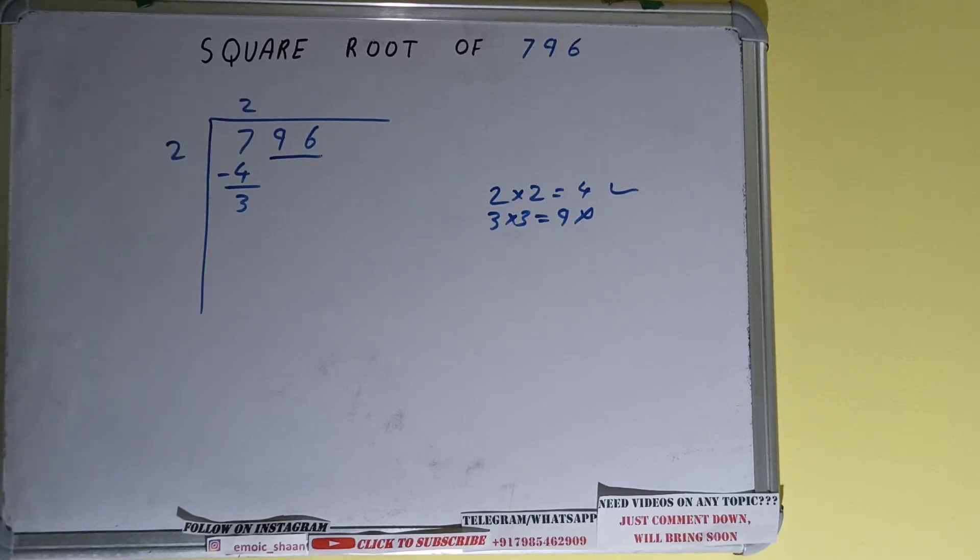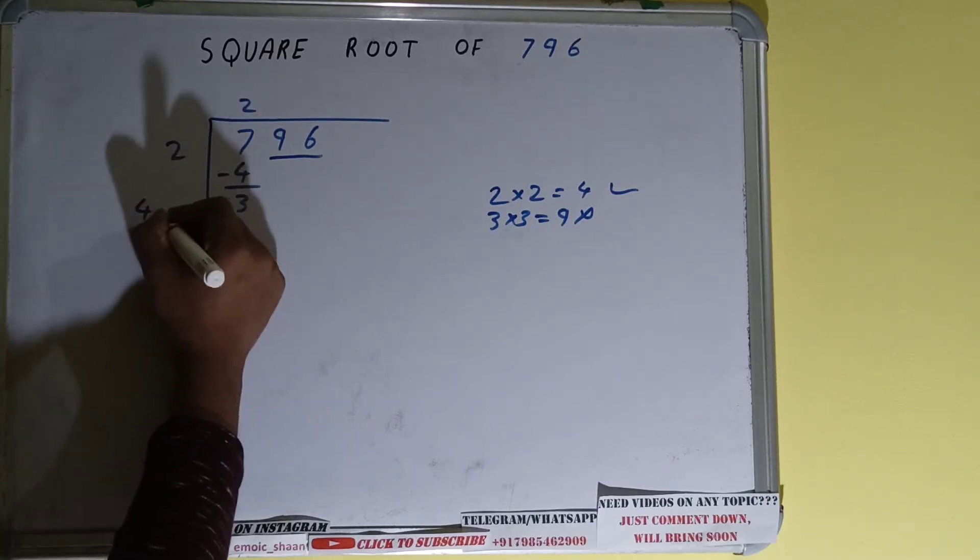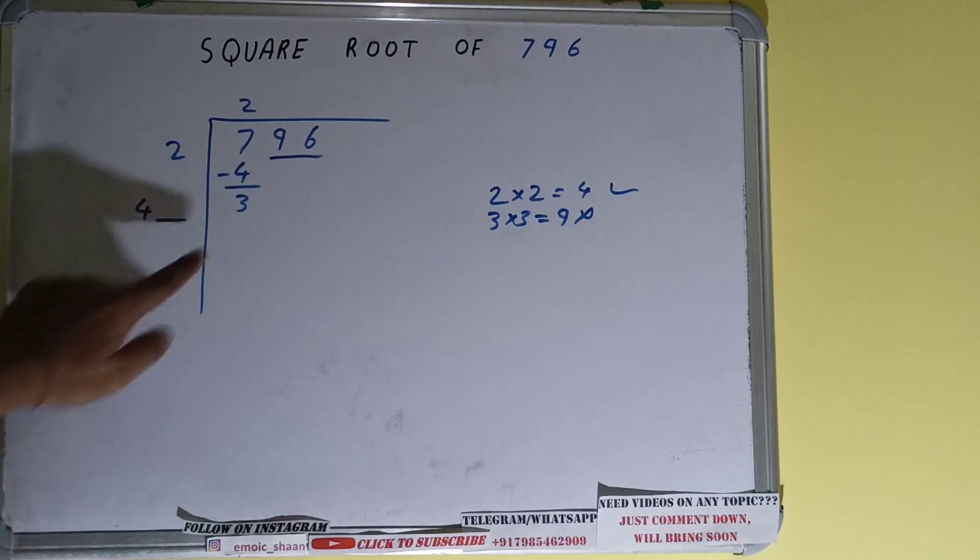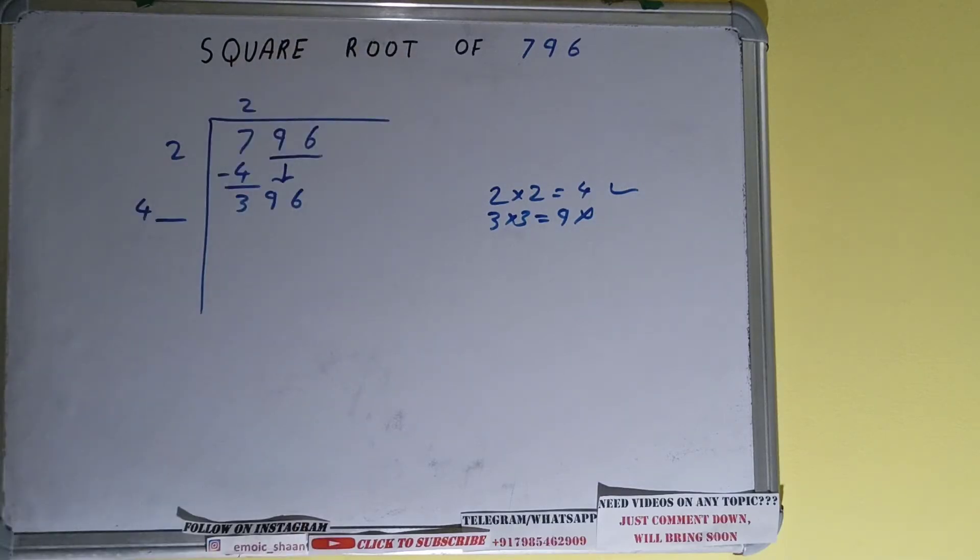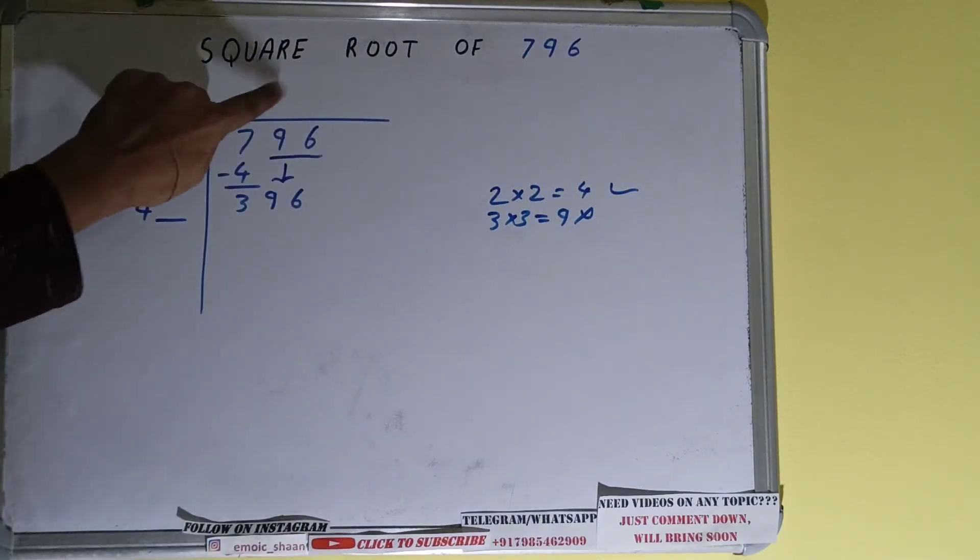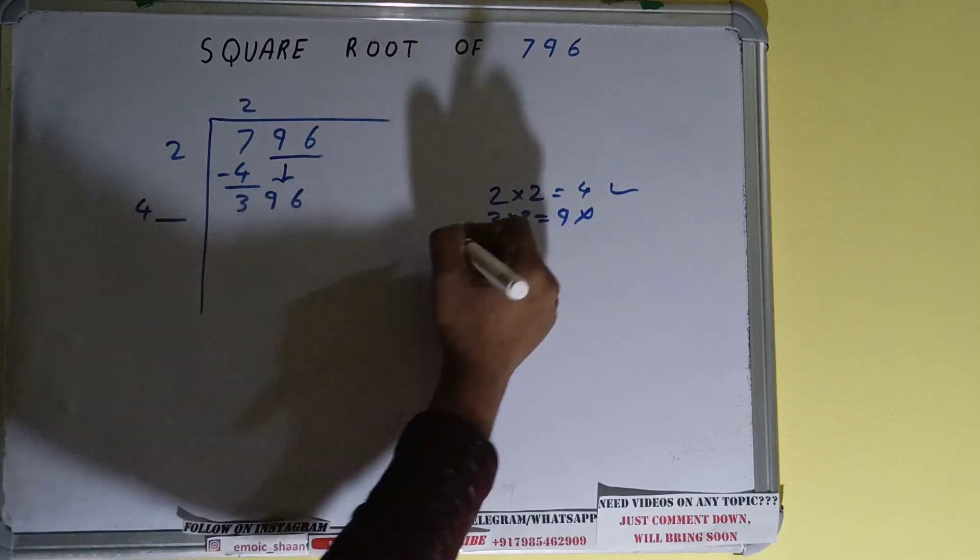Now 2 times 2, right? So do 2 plus 2, it will be 4, and keep one digit extra. This number we need to make it big so that we can divide. Bring the next pair down until it becomes 396. Now whatever number we write here, we have to write here also.